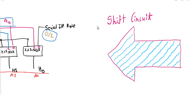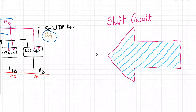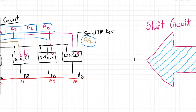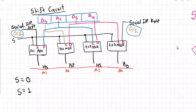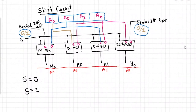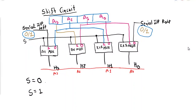Hello students. In the previous session we discussed various types of shift operations: serial shift, logical shift, circular shift, and arithmetic shift, including left shift and right shift in each type. In today's session we will continue our discussion with shift micro operations and see how we can implement the shift micro operation circuit.